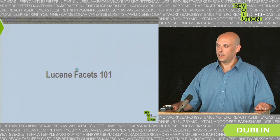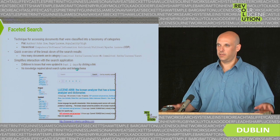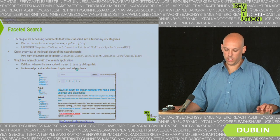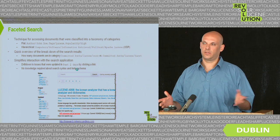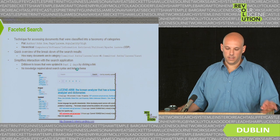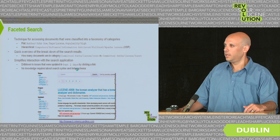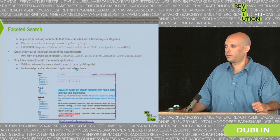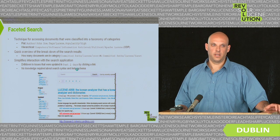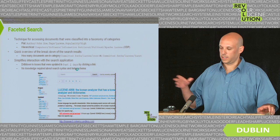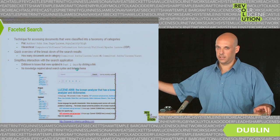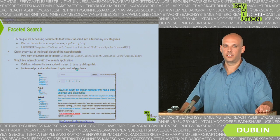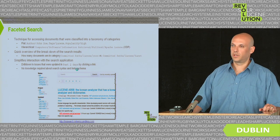First, let's get everybody on the same page — what is faceted search? If you look at Wikipedia, it's a technique for accessing documents that were classified into a taxonomy of categories. You can think about categories being flat, for example an author category, or fully hierarchical. If you look up Apache Lucene in the Open Directory Project — a project about classifying web pages into a taxonomy — it falls under a category about five or six levels deep.